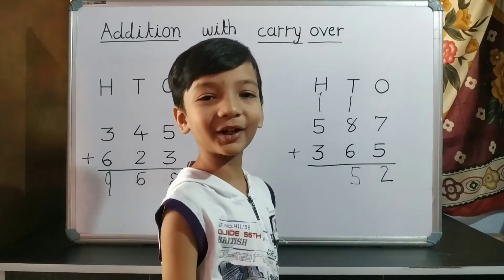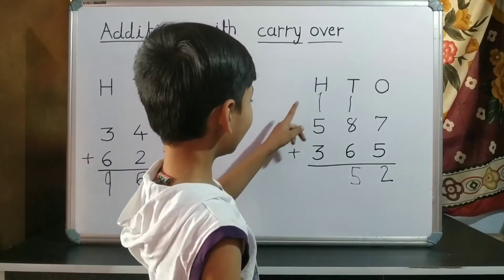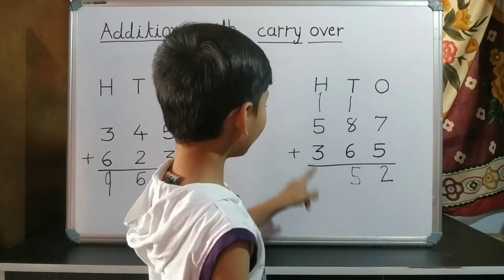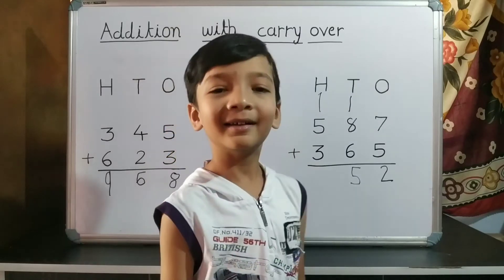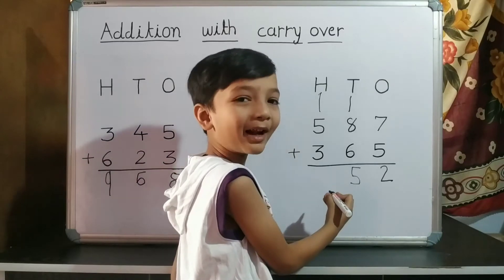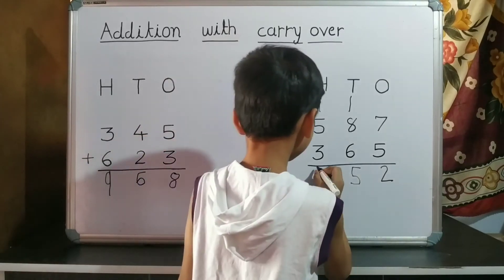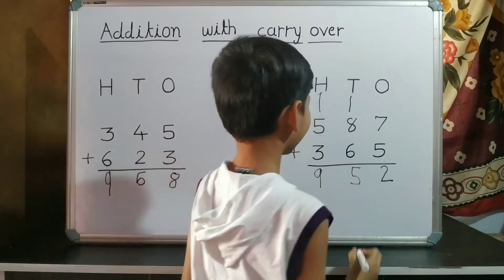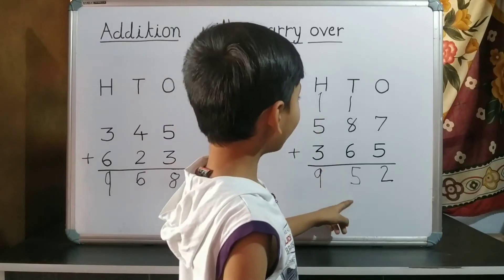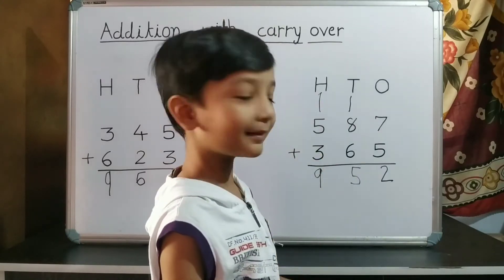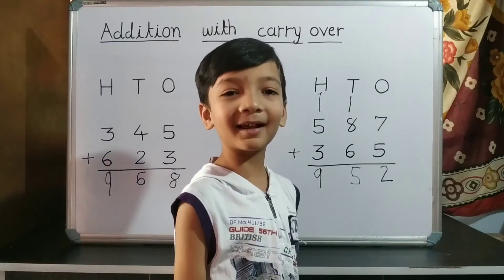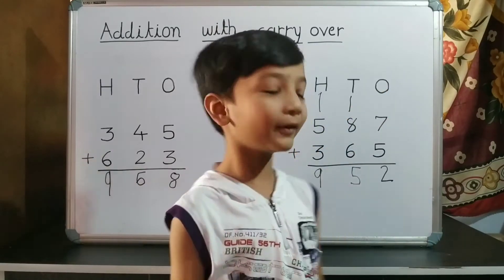Now we do addition of hundred's place. 1 plus 5 is 6. 6 plus 3 is 9. So we write 9 on hundred's place. 9 is on hundred's place, 5 is on ten's place, and 2 is on one's place. So our answer is 952.